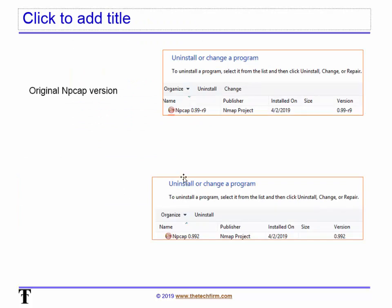So what I did was download it, replaced it, and now it shows version 992 — previously it was 99-r. It now shows today's install date, which is obviously today's date and not the actual date on the NP-CAP installer itself, so don't get thrown by that.